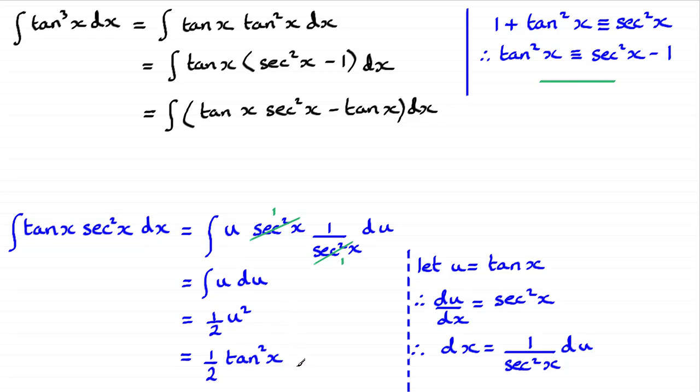I've ignored the constant here because we've got another term to integrate and I could amalgamate both constants to create one constant. So the constants have purposely been left out here. So all I need to do is put that back in for the integral of tan x sec squared x, so we get a half tan squared x.